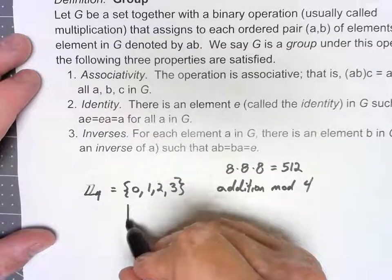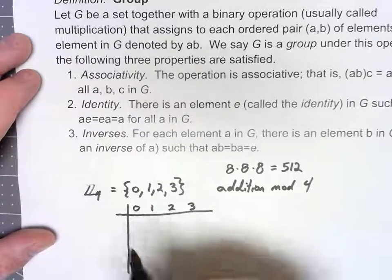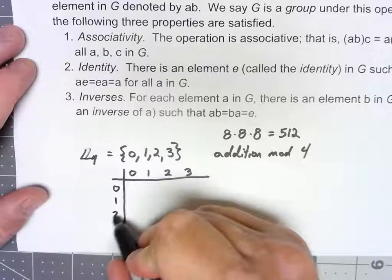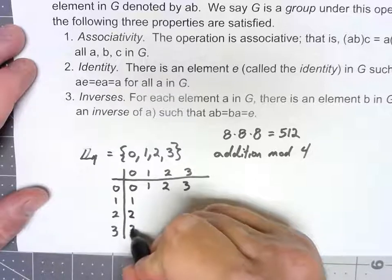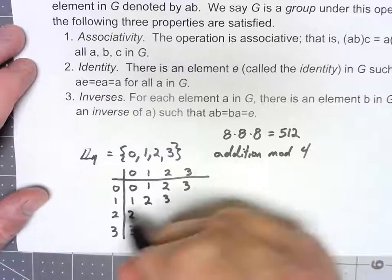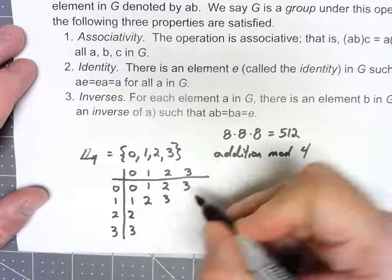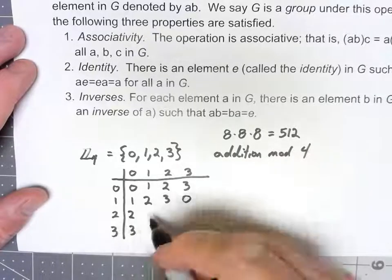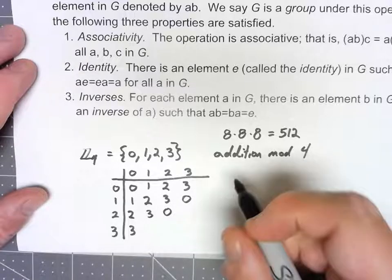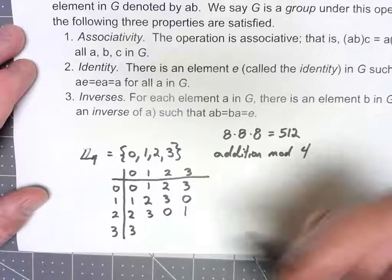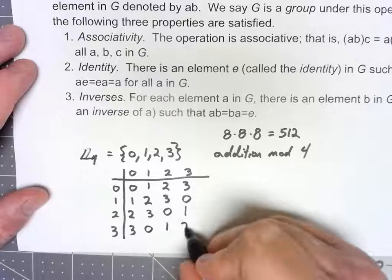Once again, we can make a Cayley table very, very easily. Adding 0 doesn't change anything. 1 and 1 is 2, 1 and 2 is 3, 1 and 3 is 4, but that's not on our set. To do it mod 4, subtract 4, and we get 0. 2 and 1 is 3, 2 and 2 is 4, which we just set as 0. 2 and 3 is 5, taking it mod 4, we subtract 4 and get 1. 3 and 1 is 4, which is 0, 3 and 2 is 5, which is 1, 3 and 3 is 6, which is 2.